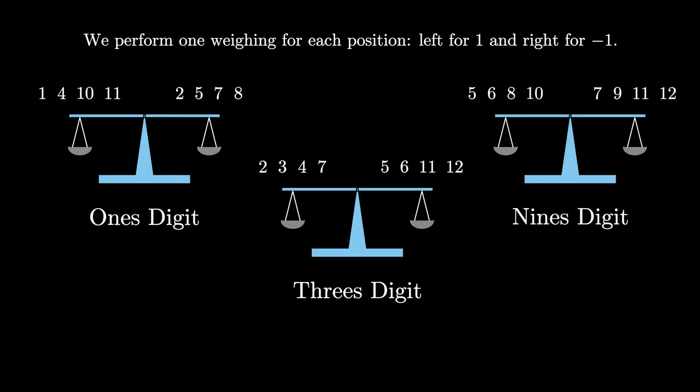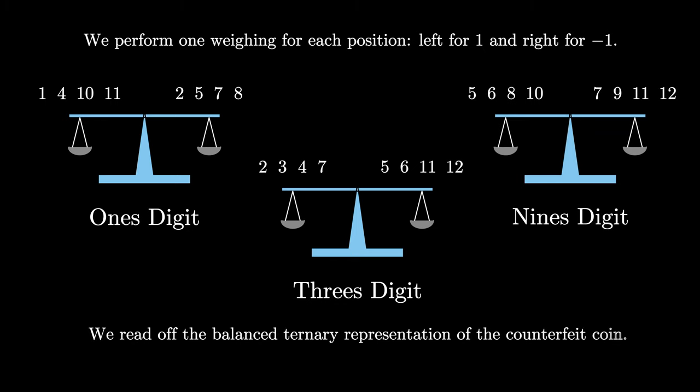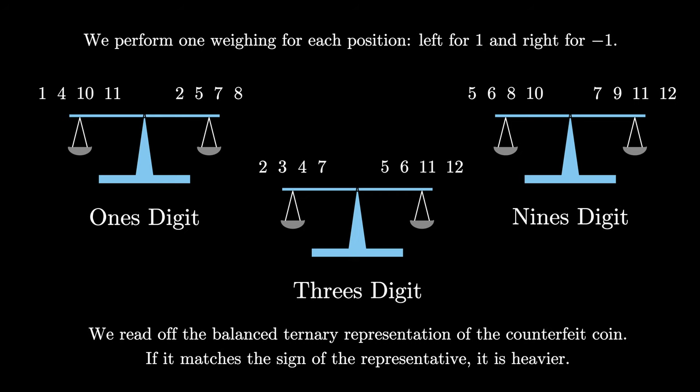We then read off the three weighings as the balanced ternary representation of an integer, and that number is the identity of the counterfeit coin. The coin is heavier than the rest if that number matches the representative we used, or lighter if it equals the negative of the representative we chose.